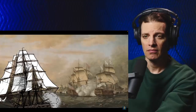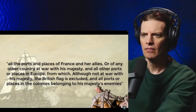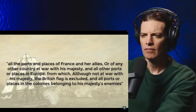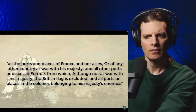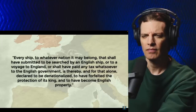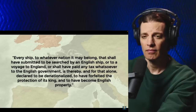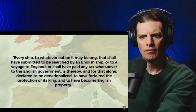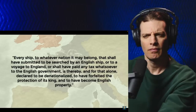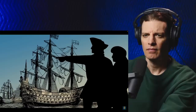By November, the original order was expanded to now include all the ports and places of France and her allies, or of any other country at war with his majesty, and all other ports or places in Europe from which the British flag is excluded, and all ports or places in the colonies belonging to his majesty's enemies. In retaliation, France, under Napoleon Bonaparte, issued the Milan Decree, which said that every ship, to whatever nation it may belong, that shall have submitted to be searched by an English ship, or to a voyage to England, or shall have paid any tax whatsoever to the English government, is thereby declared to be denationalized, to have forfeited the protection of its king, and to have become English property. Napoleon declared that any of the aforementioned ships that enter French ports, or those of French allies, are good and lawful prizes of his nation.